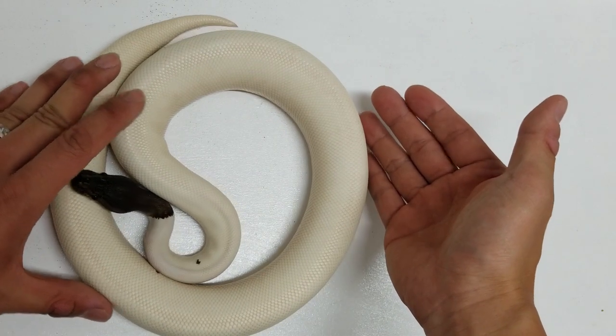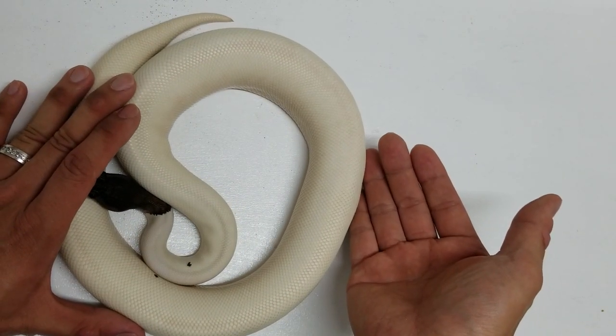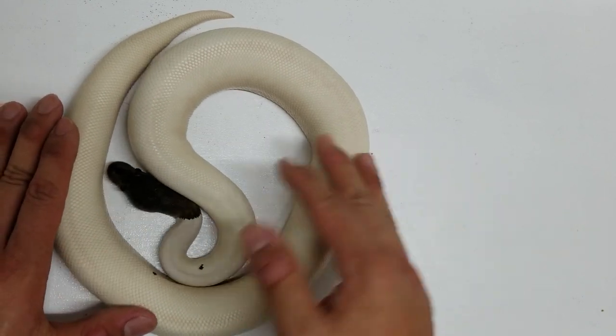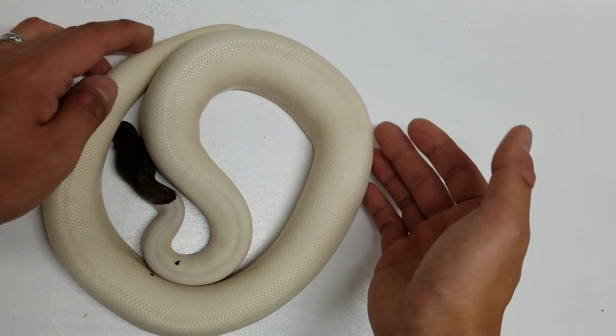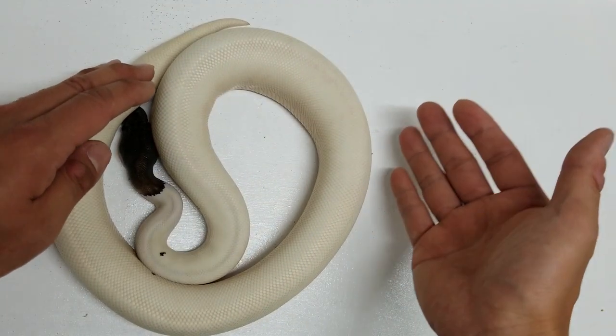Now the pairing in this is a xanthic het pied to a cinnamon pied that is also possible sandblast. I want to show off this boy. Unfortunately, he's in shed and you can see he's a little bit dull. But you can still tell he is a much darker snake where he has color and pattern. When cinnamon is combined with pied, they often turn out to be high white like this boy.